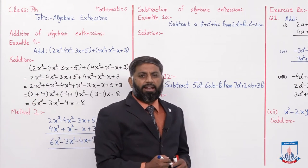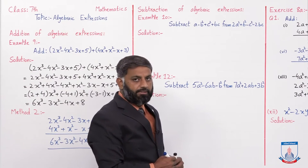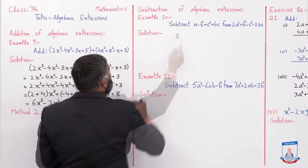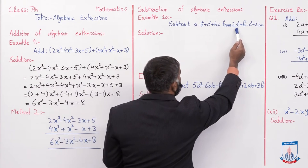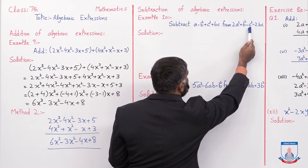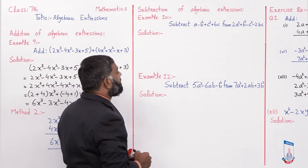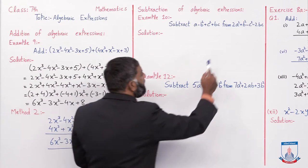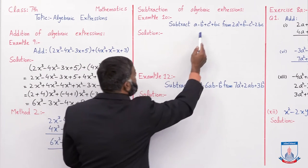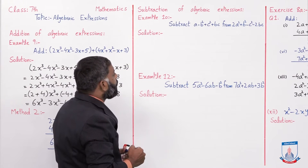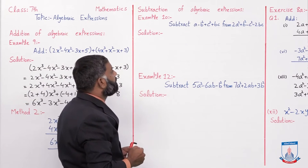Students, abhi humne addition of algebraic expressions padha. Ab hum subtraction of algebraic expressions samjhenge. Example 10 hai: subtract (a - b² + c² + bc) from (2a² + b² - c² - 2bc). Pehle hum second expression likhenge, minus pehli expression. Isko solve karne ke do methods hain. Is example ko vertical method se karunga, next example doosre method se.